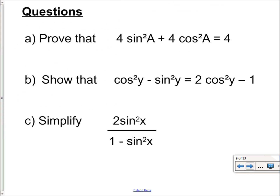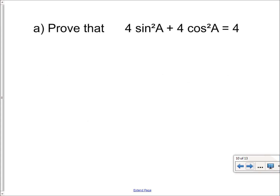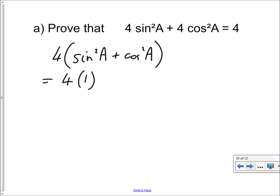See how you get on with these three questions yourselves — pause the video and come back to check your answers. For the first one: 4 sine squared a plus 4 cos squared a. Taking out a common factor of 4, we have 4 times the quantity sine squared a plus cos squared a. Since sine squared plus cos squared of any angle equals one, that gives 4 times 1, which is just 4. Done.